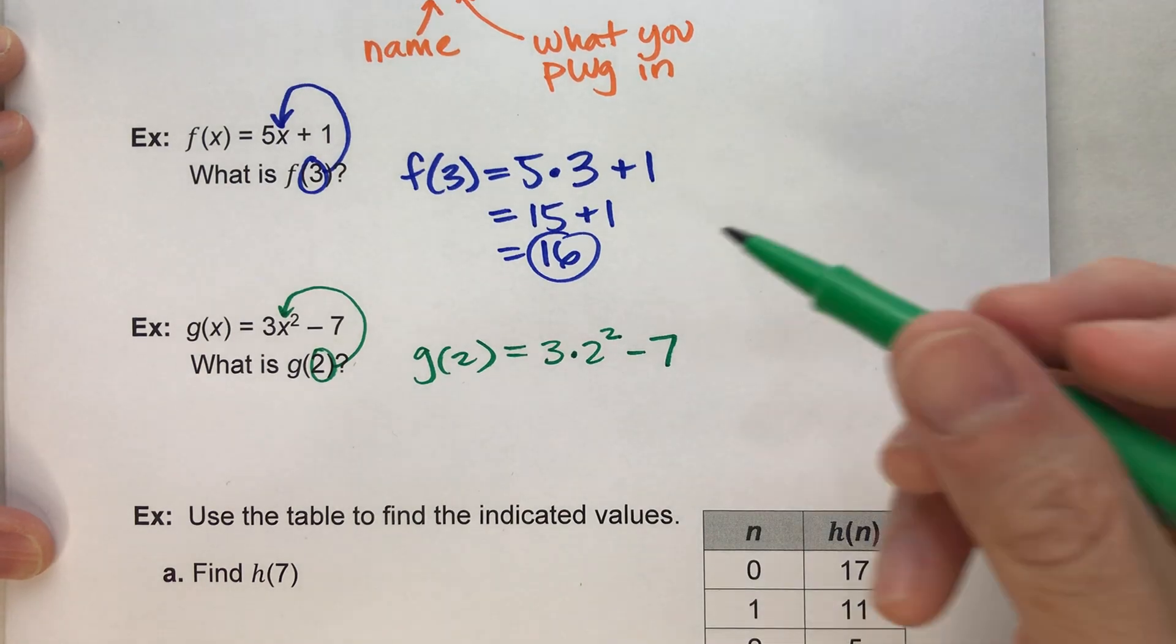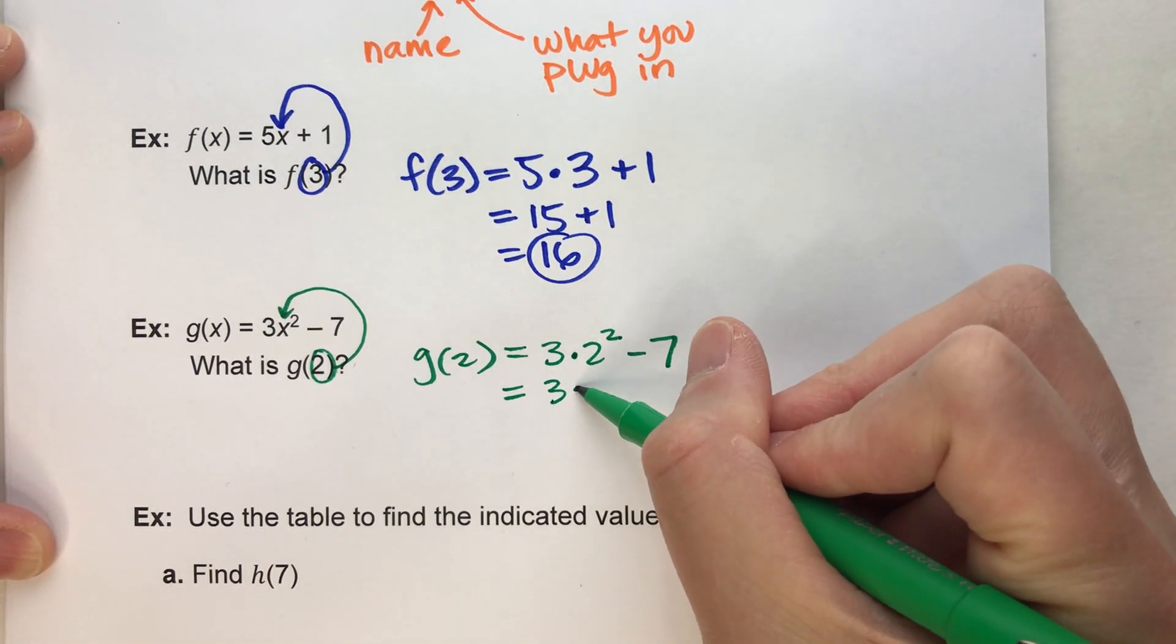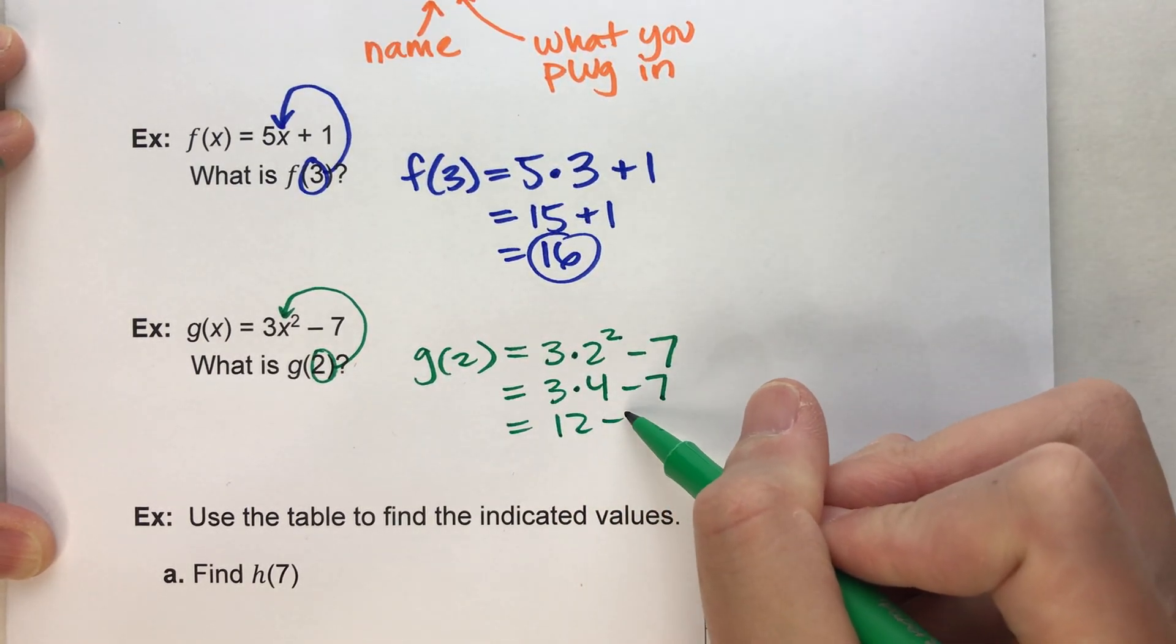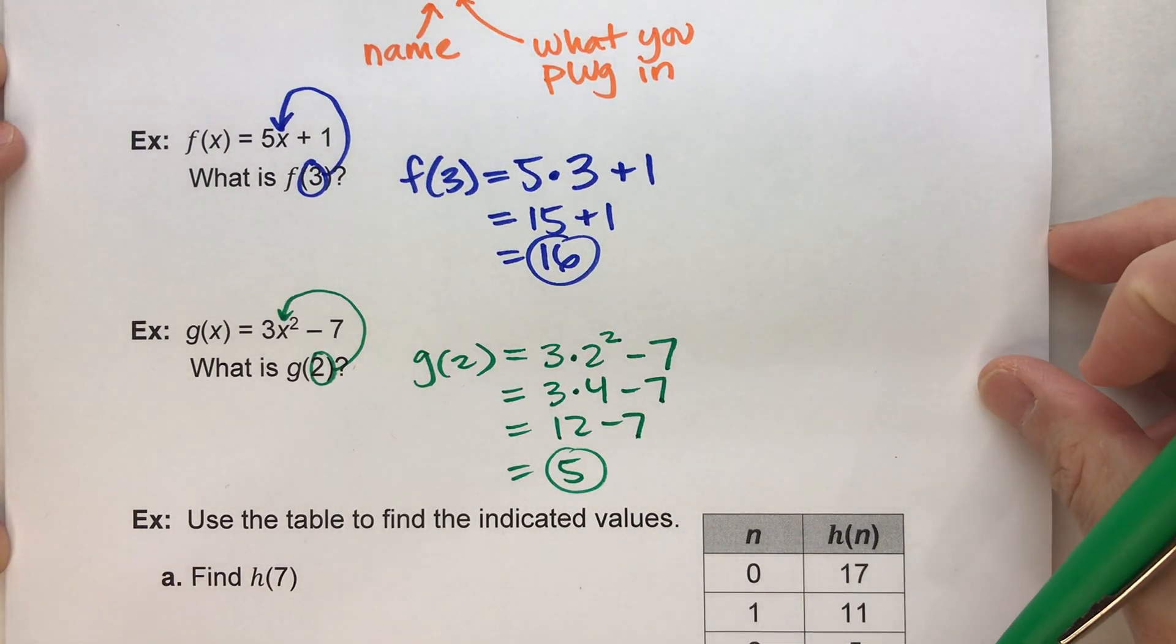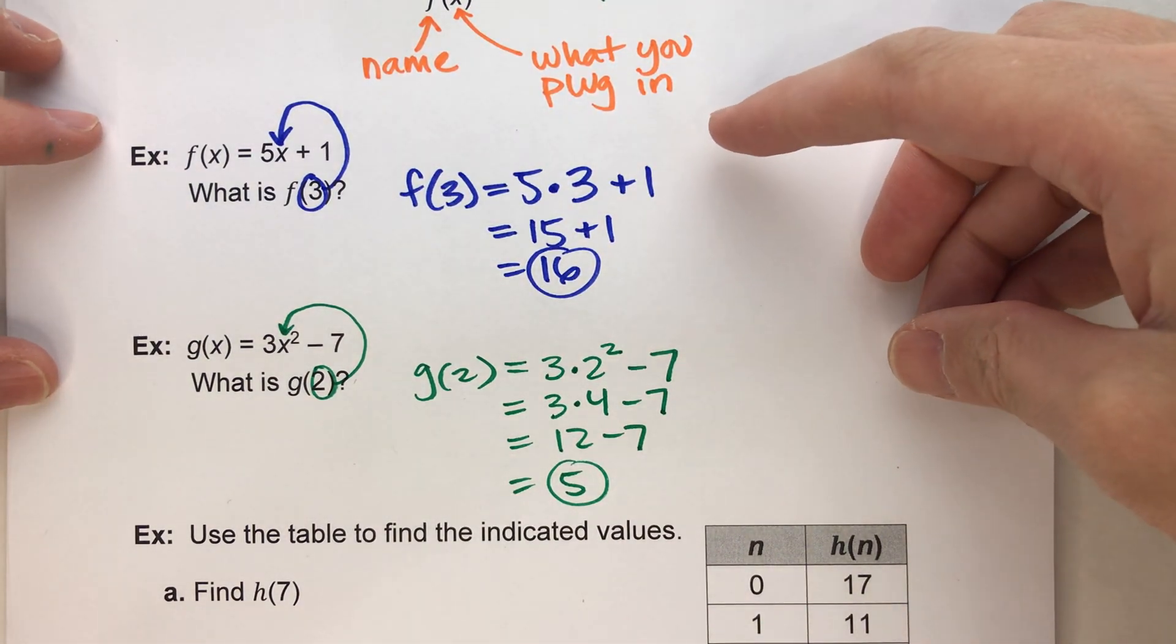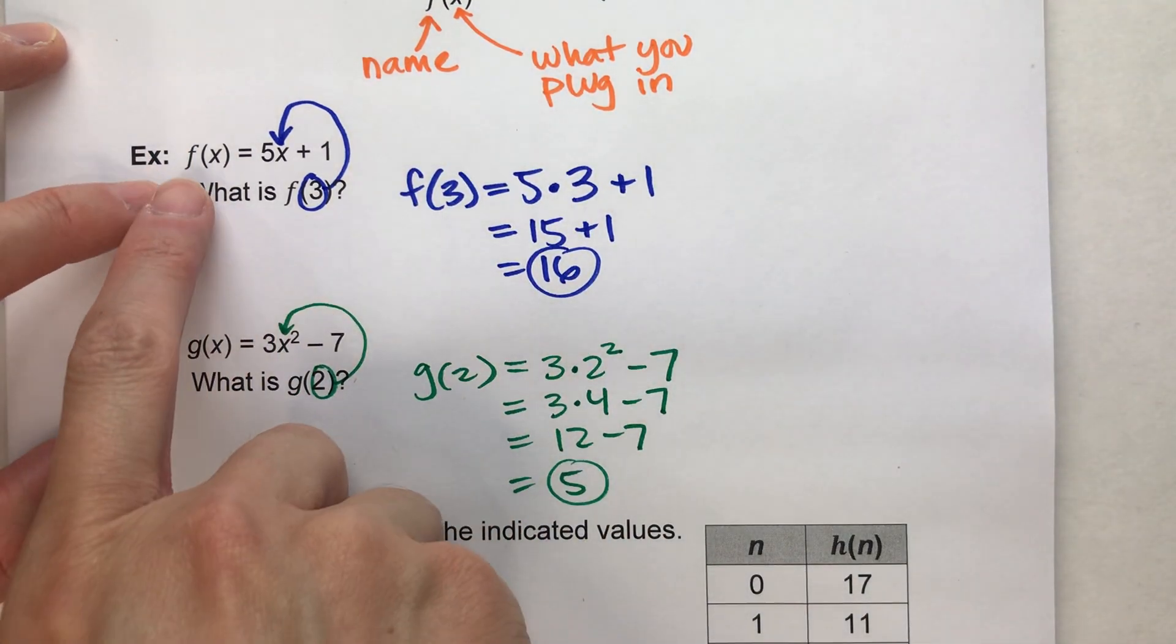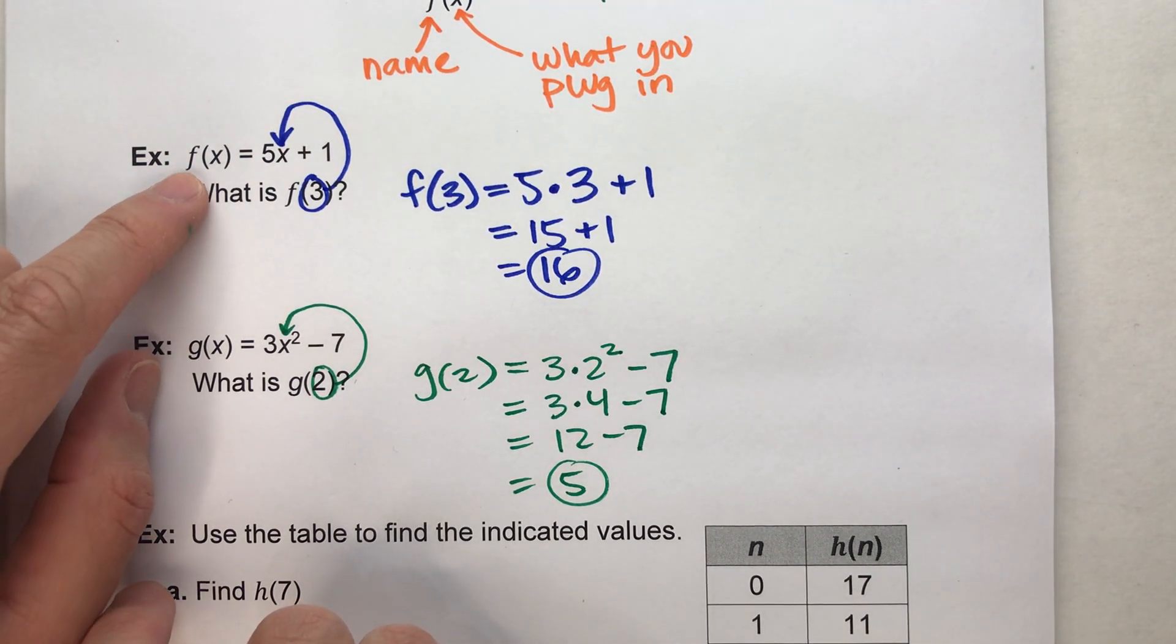And, of course, we have to follow the order of operations, we have to do the exponent first, then we have to multiply second, and we have to subtract last, and there we have it. So function rules aren't that much different than equations you've used before, they just look a little bit different. It's a different way of thinking about it, because we're thinking about taking input and putting it into a rule, and that's why it's written like this.